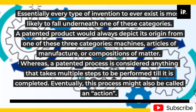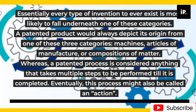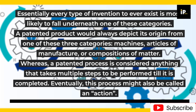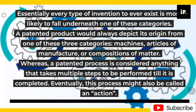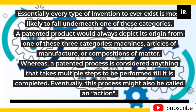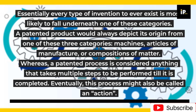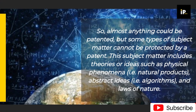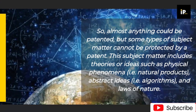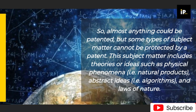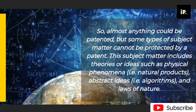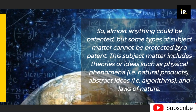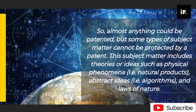A patented product would always depict its origin from one of three categories — machines, articles of manufacture, or compositions of matter — whereas a patented process is considered anything that takes multiple steps to be performed until it is completed; this process might also be called an action. So almost anything could be patented, but some types of subject matter cannot be protected by a patent.